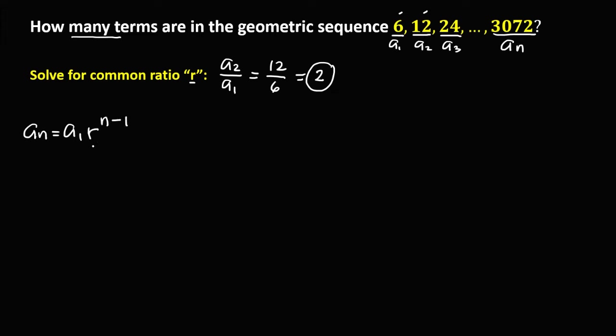Substituting the values: aₙ = 3072, a₁ = 6, and r = 2. So 3072 = 6 × 2^(n-1), where n is the unknown number of terms.